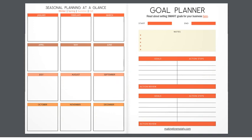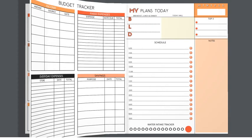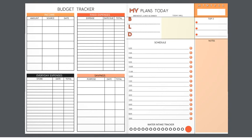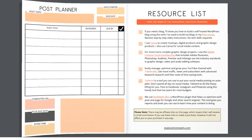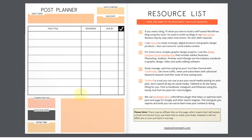Here's where you can write down your goals. Goals are also a very important part of building an online business. Here is a budget tracker, so for all the different expenses — whether it's related to your business or your everyday expenses — you can write them down here. Here's a place to write down your daily plans, your monthly plans, and this is how you can actually plan out your posts.